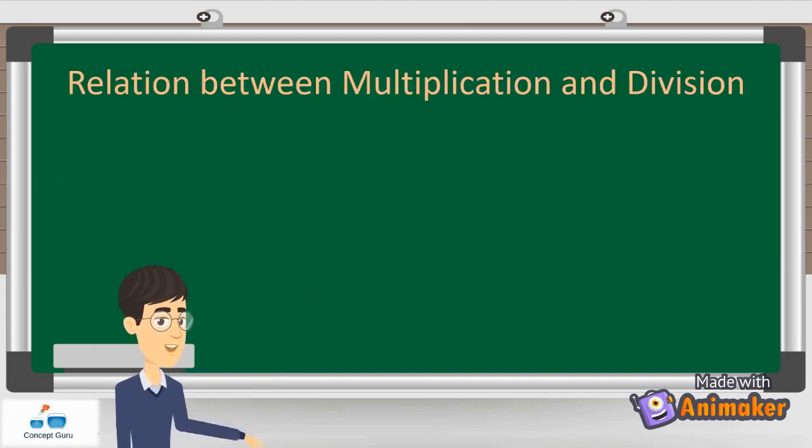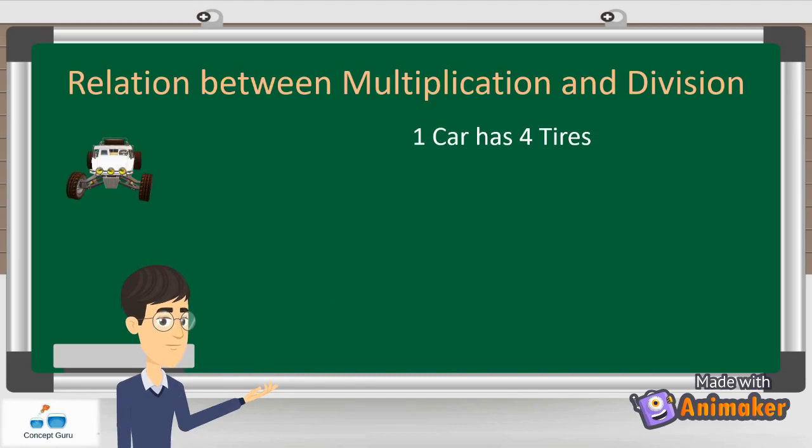Now let's look at the relationship between multiplication and division. Here we have one car. Can you tell me how many tires a car has? Yes, a car has four tires.